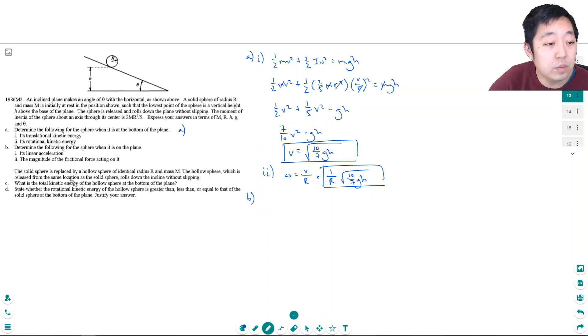Part b, determine the following for the sphere when it is on the plane: its linear acceleration and the magnitude of the frictional force acting on it. Let's take a look at the free body diagram on this. I got a force going down, that's mg. I have a normal force. Then I have friction acting this way here. So those are the three forces acting on it.